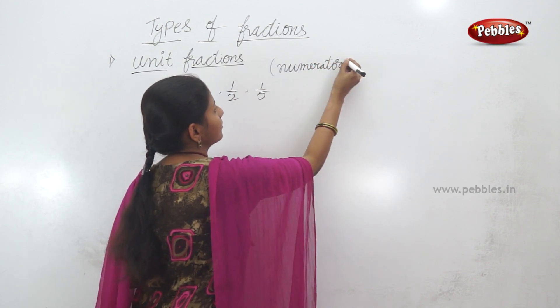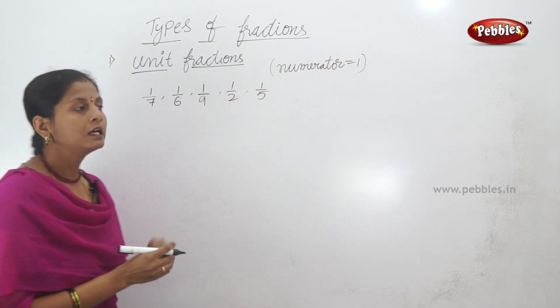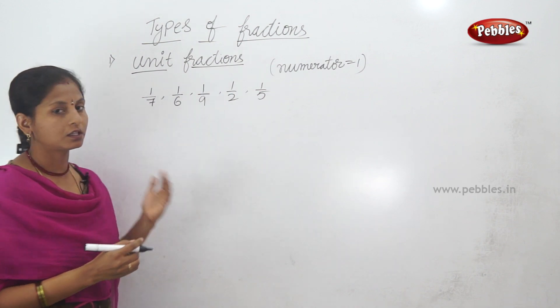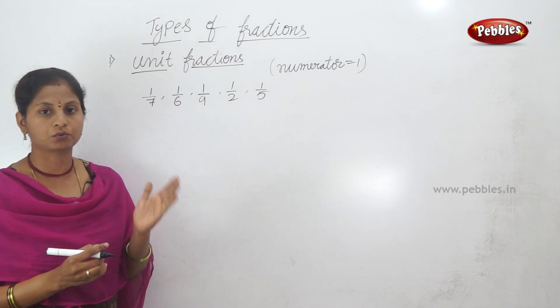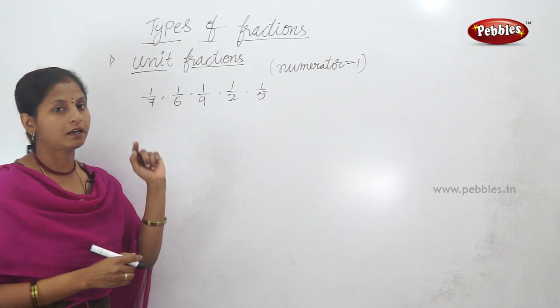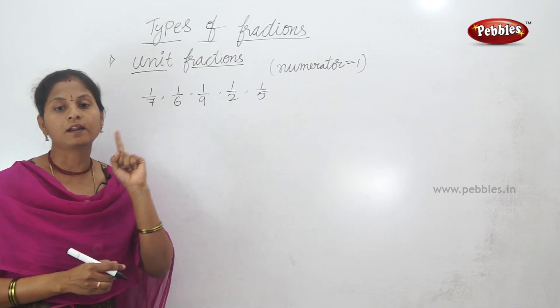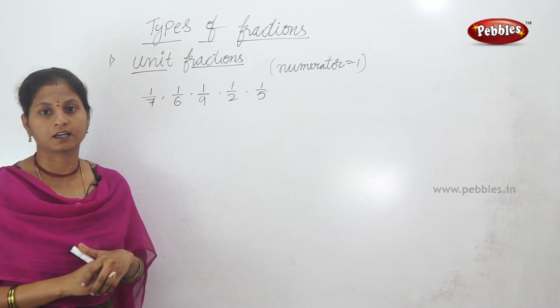Unit fractions. The denominator can be any number — 1 digit, 2 digit, any number of digits. There is always a 1 in the numerator. This is a unit fraction.